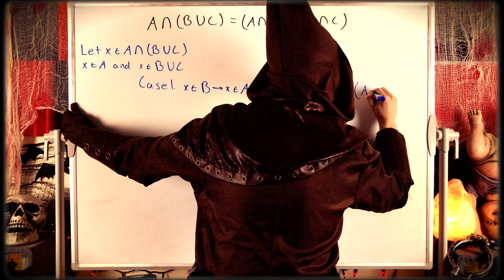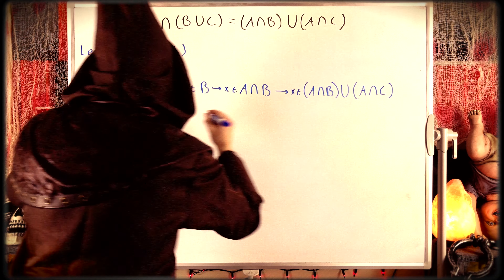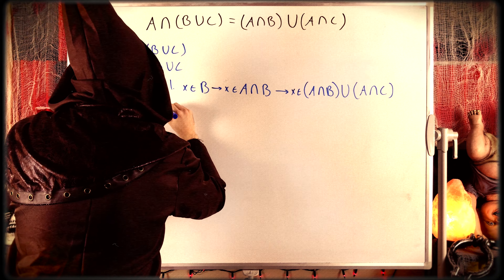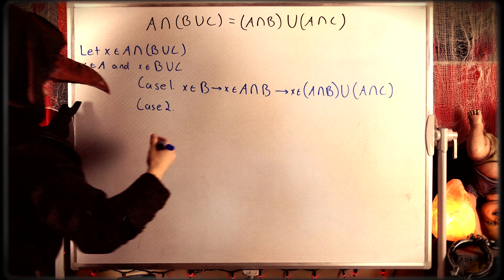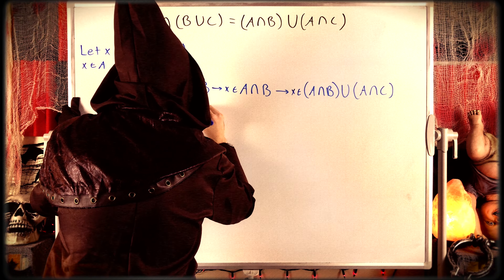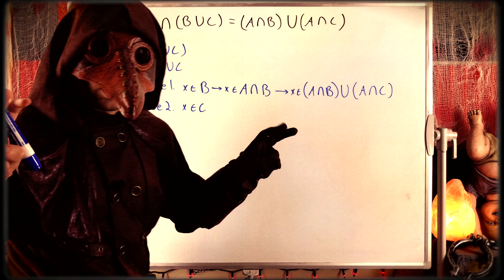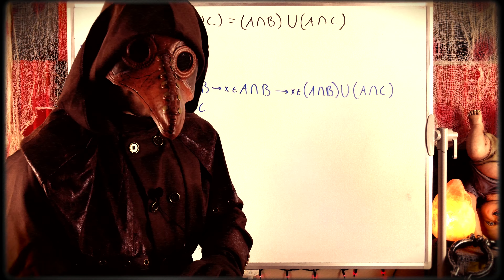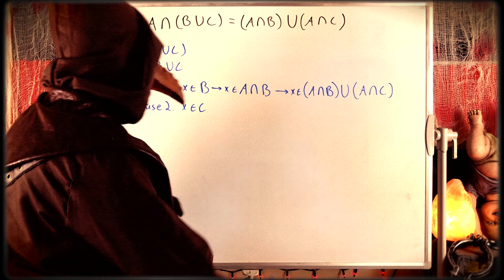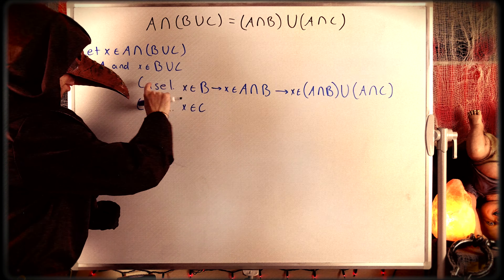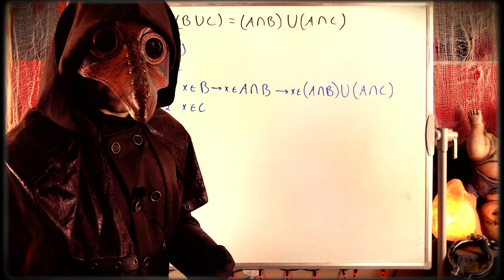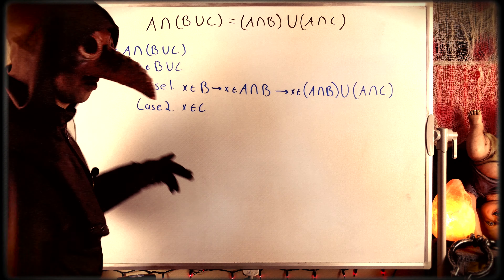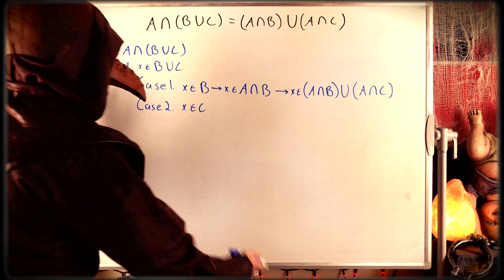Case two goes basically the exact same way: x is an element of C. There is a sort of third case where x is an element of both B and C, but that case is covered by both of these cases. If x is in both B and C, case one applies and so does case two. So there are only two cases to think about.